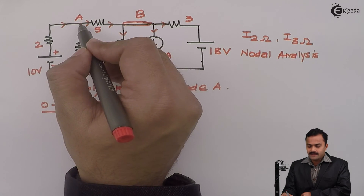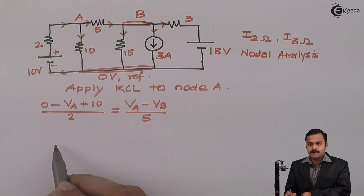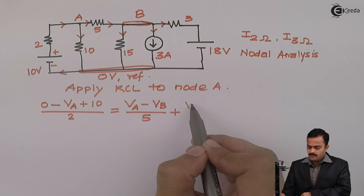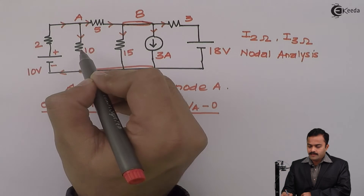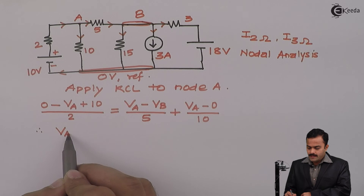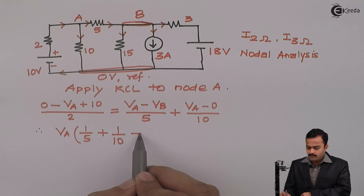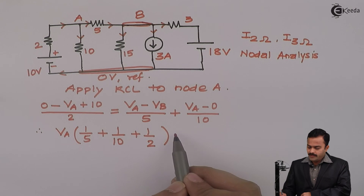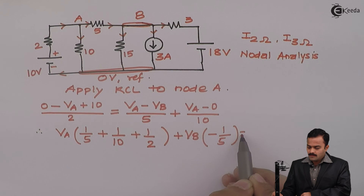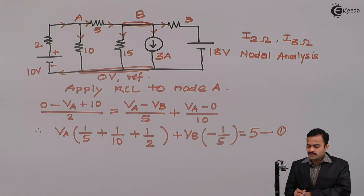These two are outgoing currents starting at A and ending at B. So the equation will be V_A minus V_B divided by 5, plus 1/10. This is also an outgoing current starting at A and ending on the reference, so V_A minus 0 divided by 10 ohm. Clubbing all V_A terms together, the coefficient of V_A is 1/5 plus 1/10 and that term moved over becomes 1/2. Coefficient of V_B is minus 1/5, equal to the constant 10/2 which is 5. This is equation number 1.